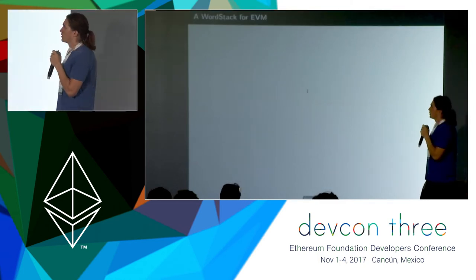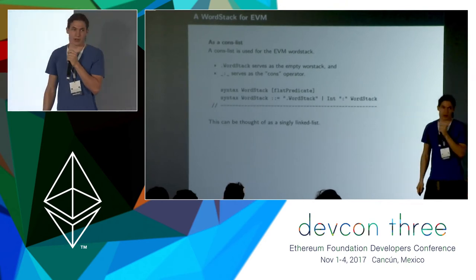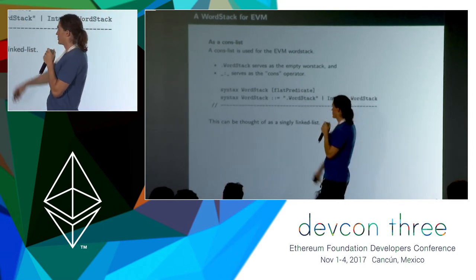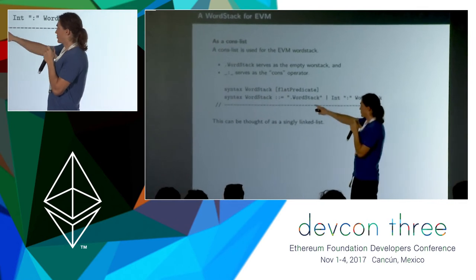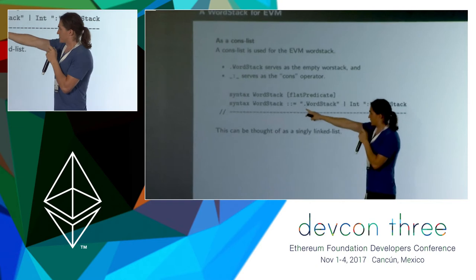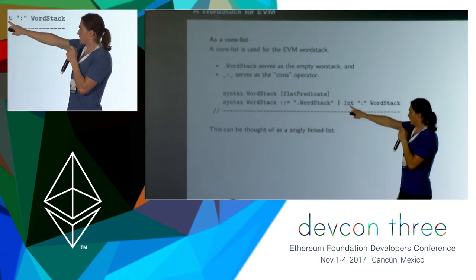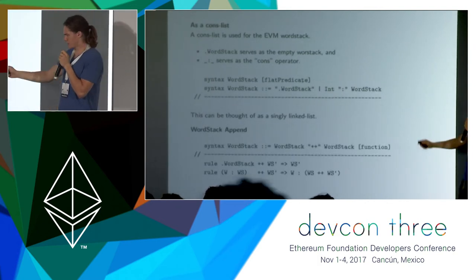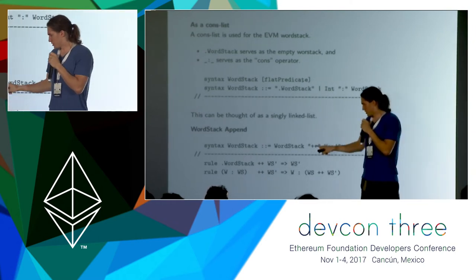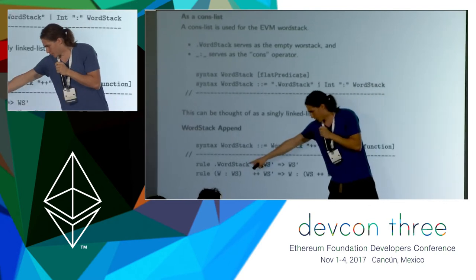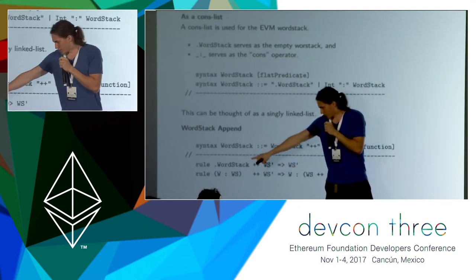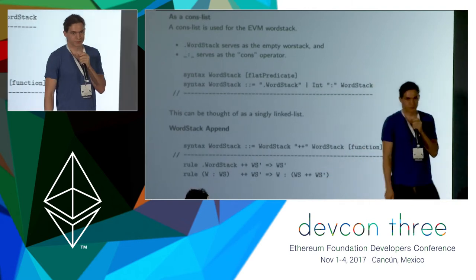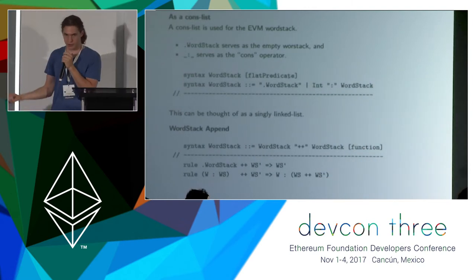Defining data structures in K: this is going to be a word stack for EVM, and we're going to define it as a simple cons list — anyone in functional programming languages will recognize this. We have this dot-word-stack which serves as the empty element of the cons list, and then you can cons an integer onto a word stack to produce a word stack. So this can be thought of as a singly linked list. Here's word stack append — given two word stacks you can put ++ in between them to produce a word stack. Dot-word-stack appended to some word stack is just the word stack, and a cons-word appended to a word stack is the word cons'd to the appending of the tails.